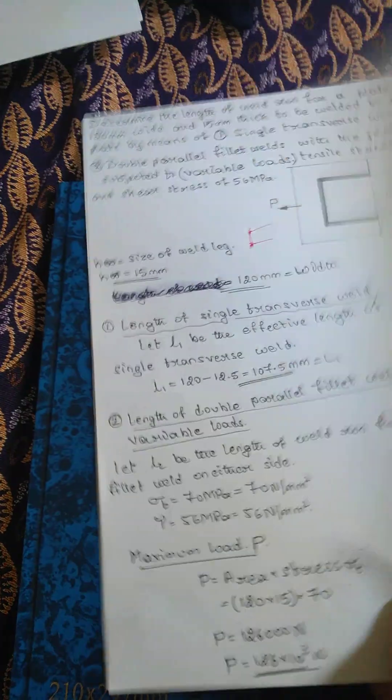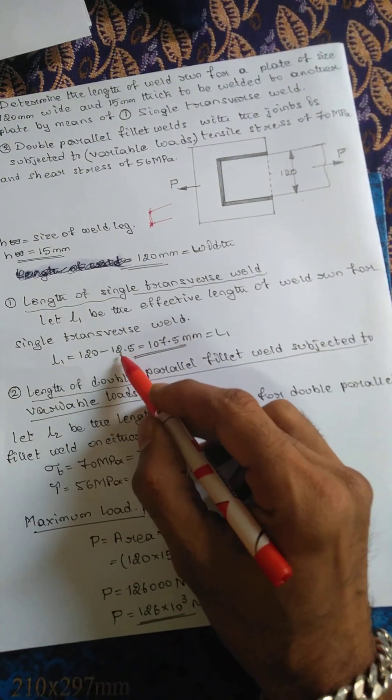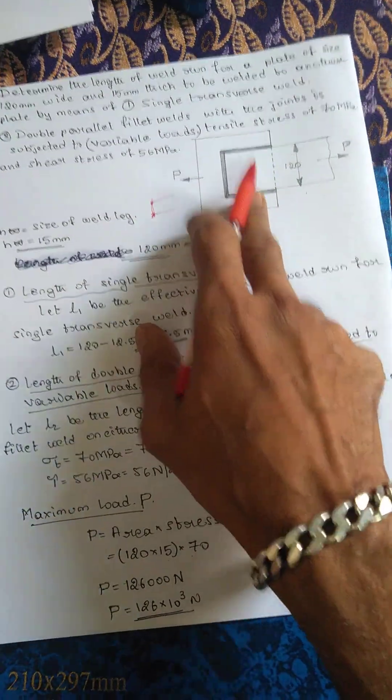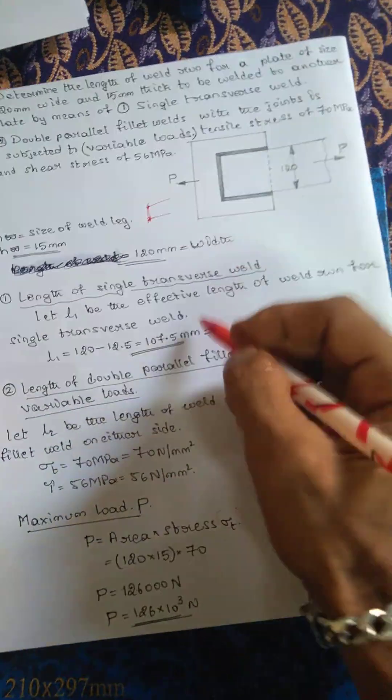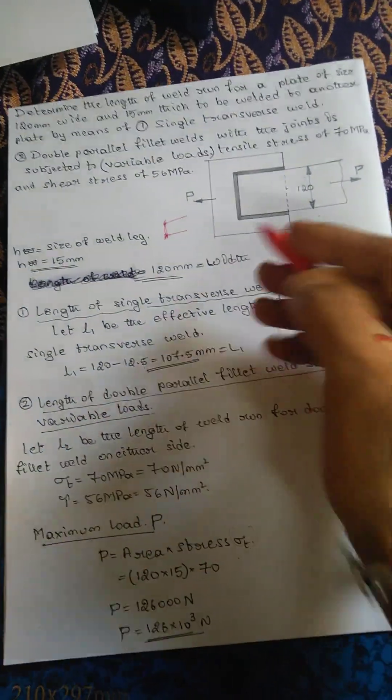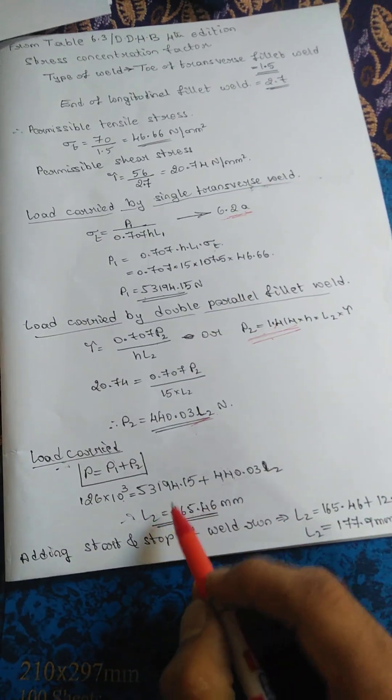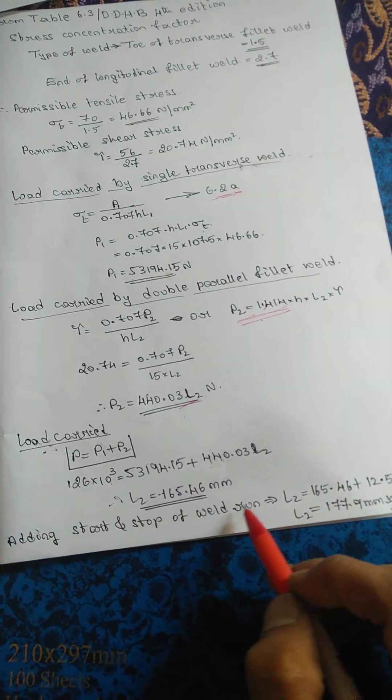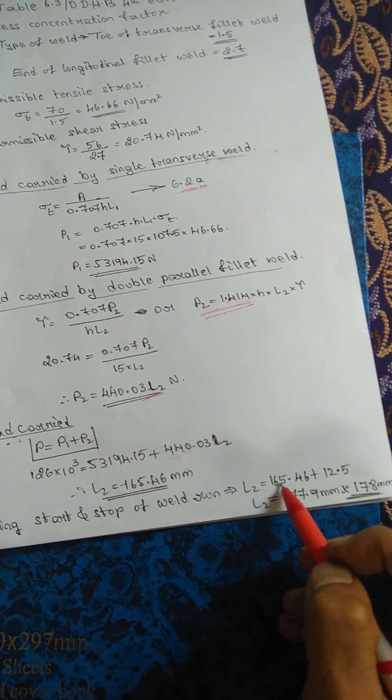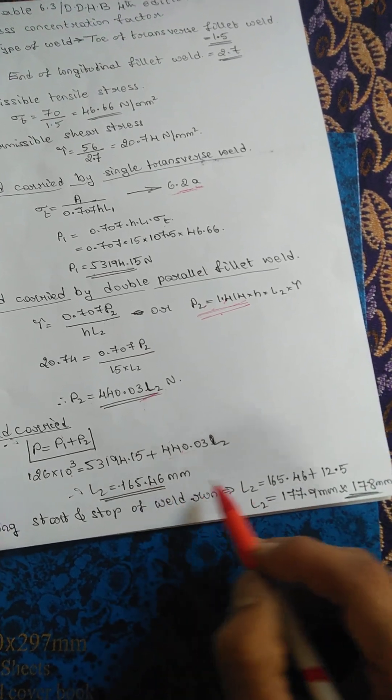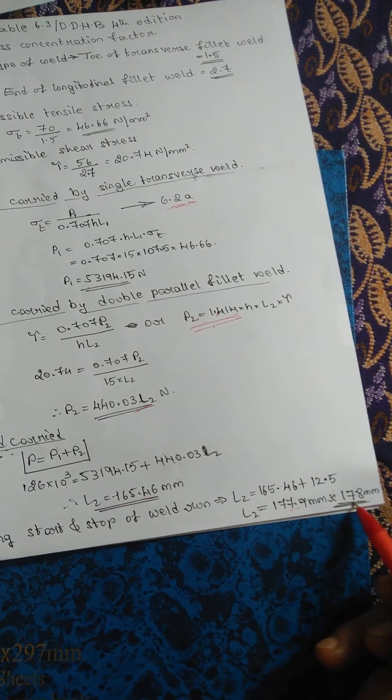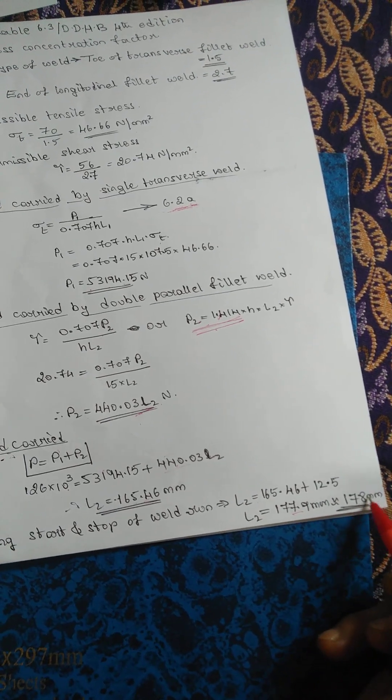In this problem, in transverse fillet weld calculation, we deducted 12.5 for welding weld run. Here we have to add it at the end - start and stop of weld run. That is, L2 is equal to 165.46 plus 12.5, or else you can make it a full number of 180 as well.